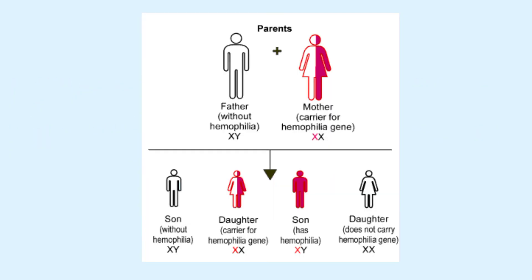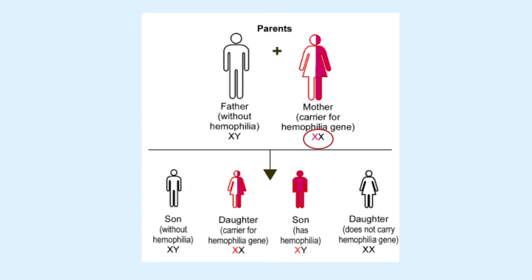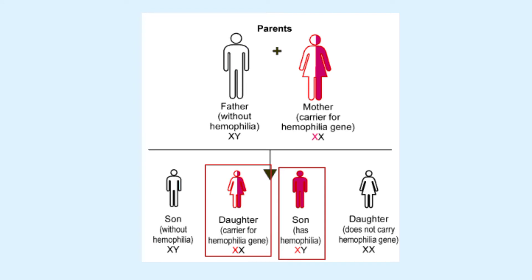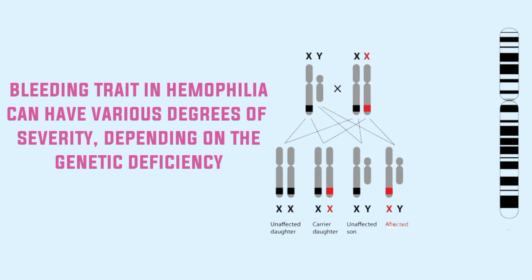Both factor 8 and factor 9 are transmitted genetically by way of the female chromosomes. Therefore a woman will almost never have hemophilia because at least one of her two X chromosomes will have the appropriate genes. If one of her X chromosomes is deficient, she will be a hemophilia carrier, transmitting the disease to half of her male offspring and transmitting the carrier state to half of her female offspring.